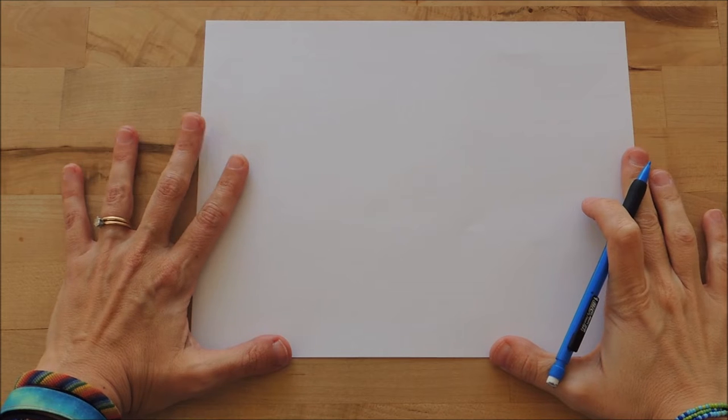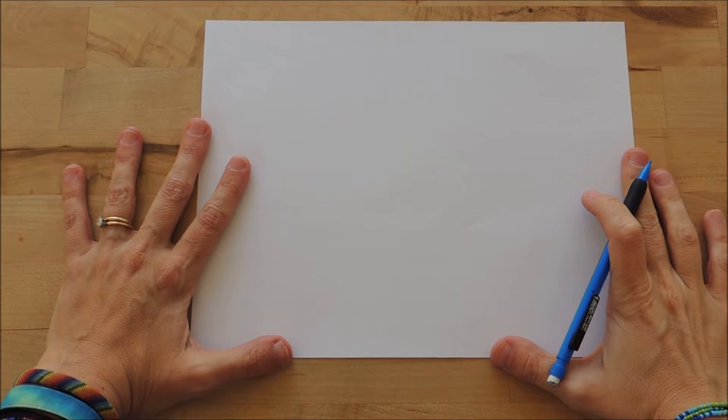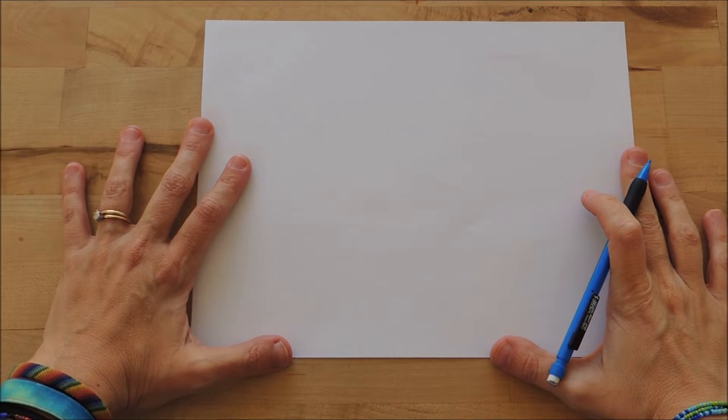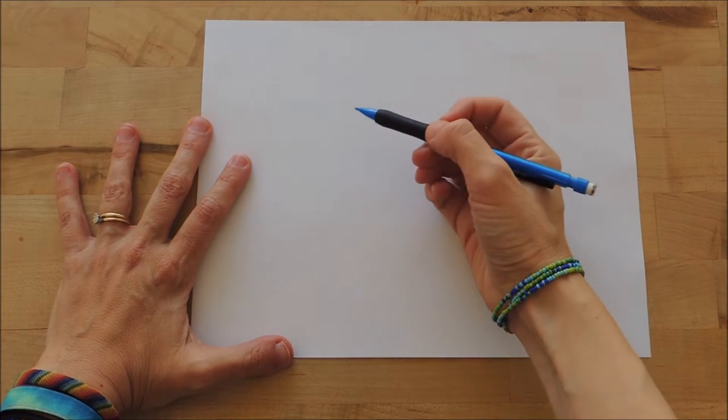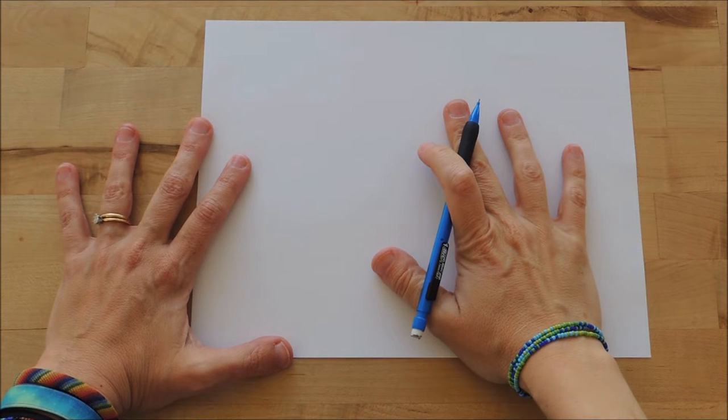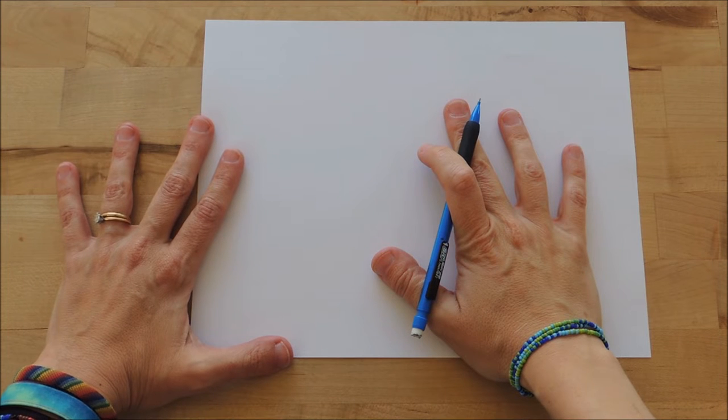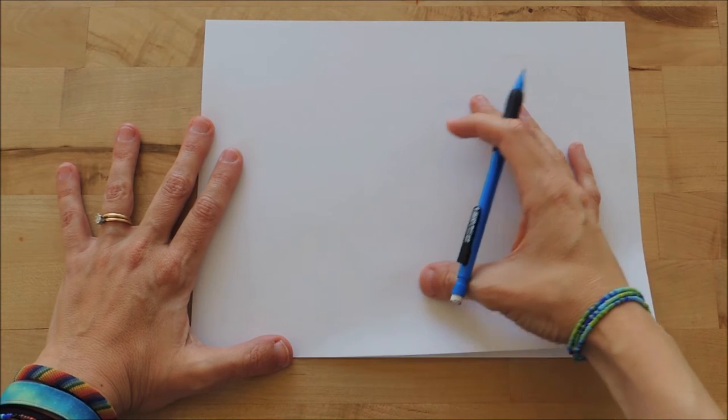The first place I like to start when I'm learning any new quilting motif is with paper and pencil. When I'm thinking about the circuit board quilting motif, I'm thinking about it in a very linear aspect. I know that the circuit boards we just looked at had some off angles, but for me, creating this motif is going to be easier if I keep things vertical and horizontal.